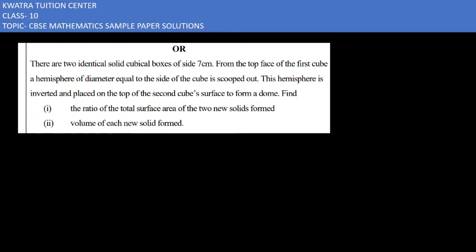Find the ratio of the total surface area of the two new solids formed. In the first case, if you have a cube and in it, you have to scoop out a hemisphere out of it. We have to scoop out a hemisphere, so if you have a hemisphere scooped out, then you have to remove the total surface area.